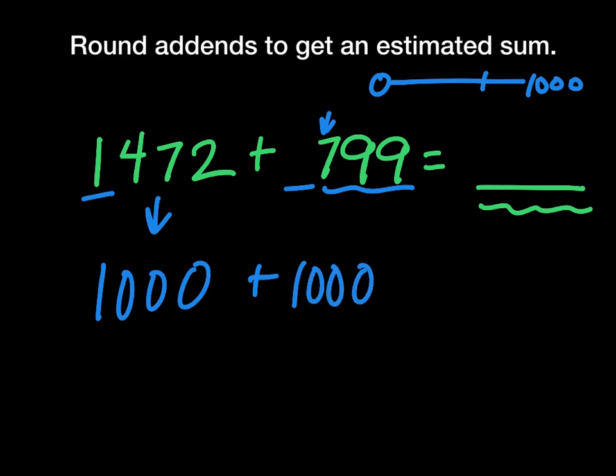So my estimated sum, after I add those two numbers together, would be 2,000.